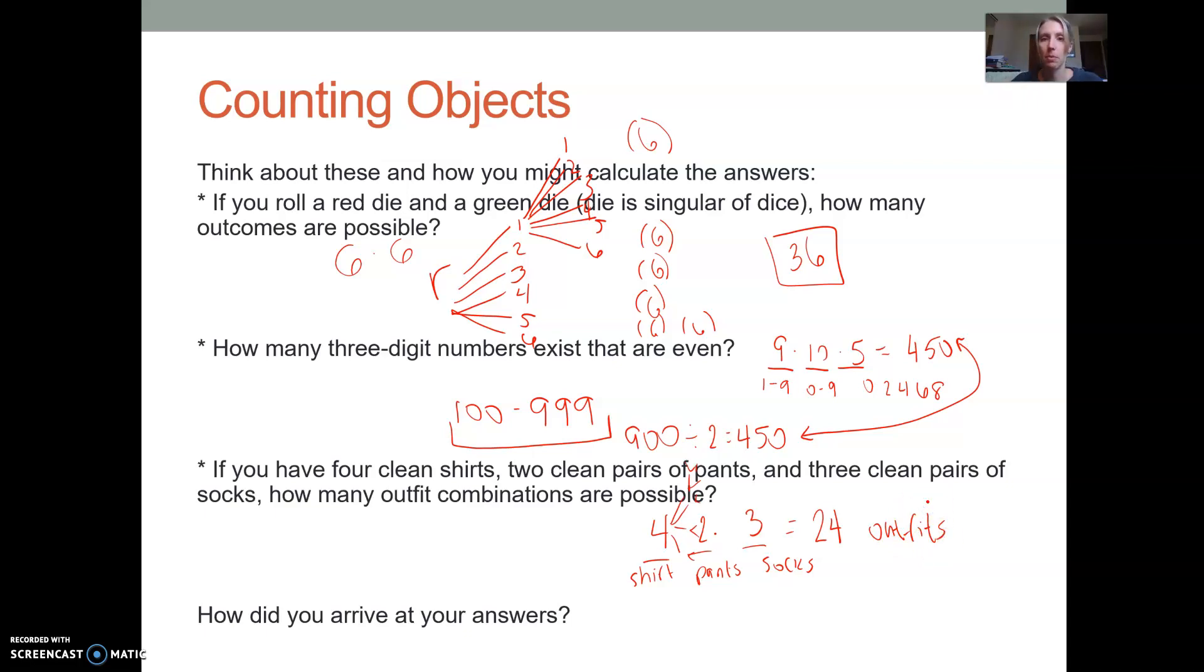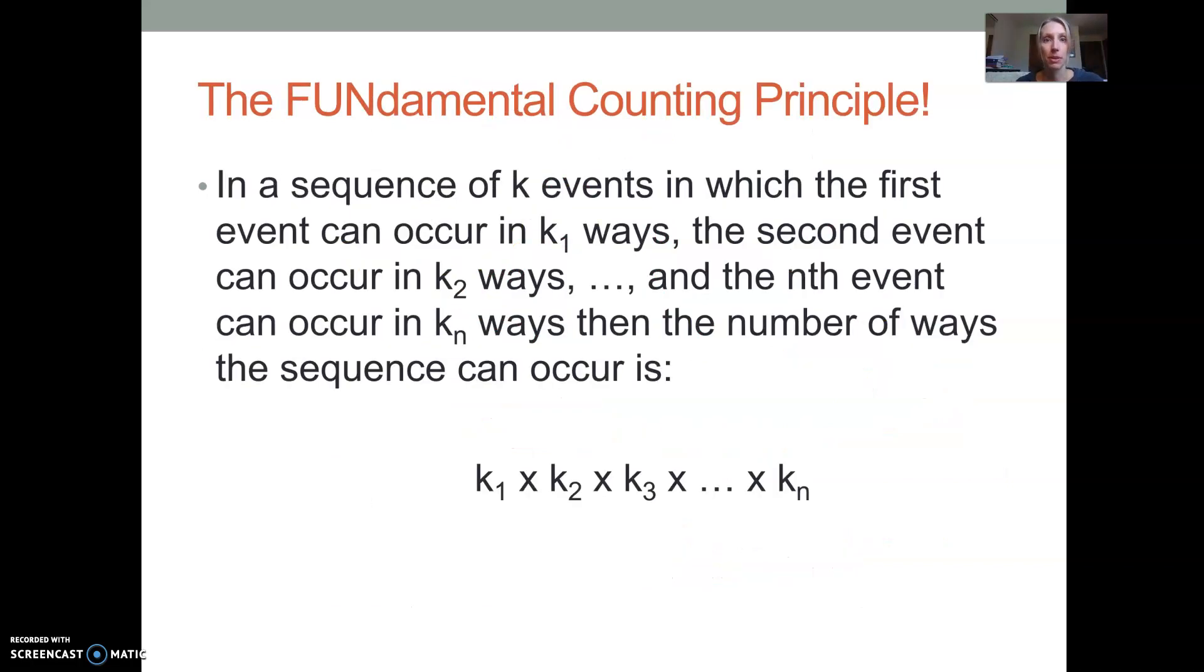All three of these, when we did the multiplication, the six times six, the nine times 10 times five, the four times three times two, that is the fundamental counting principle. So what it says is in a sequence of k events in which the first event can occur in k sub one ways, just meaning there's k sub one possibilities. So like for the shirt question, there were four possibilities. The second event can occur in k sub two ways and on and on. Then the number of ways that we can make arrangements would be k sub one times k sub two times k sub three, blah, blah, blah, times k sub n. So sometimes it's called the multiplication principle. You might be able to see why.